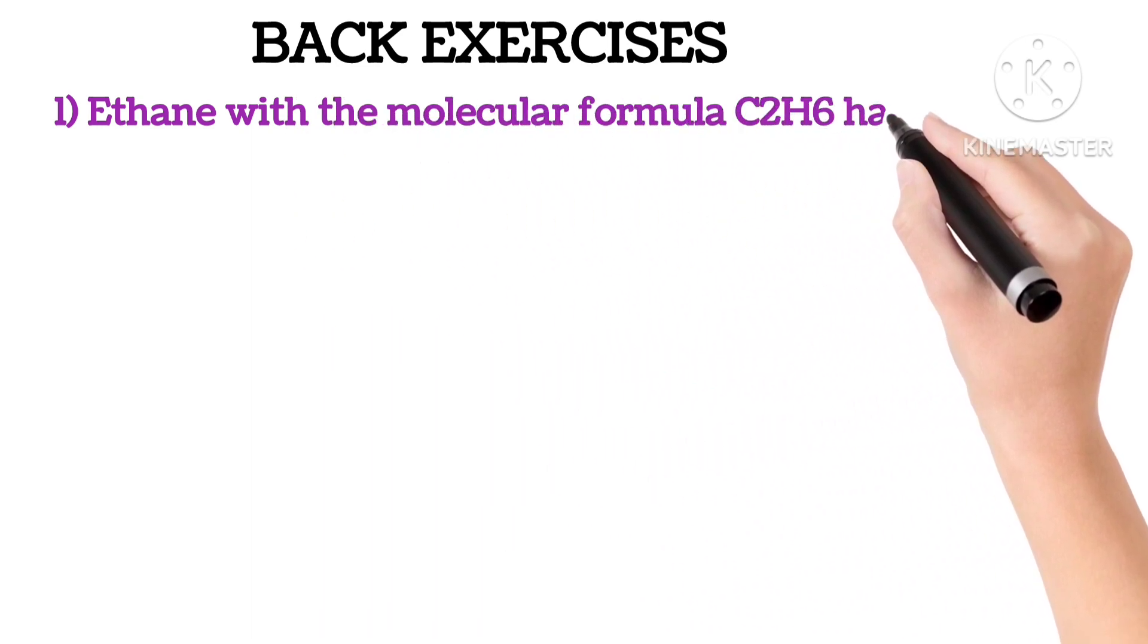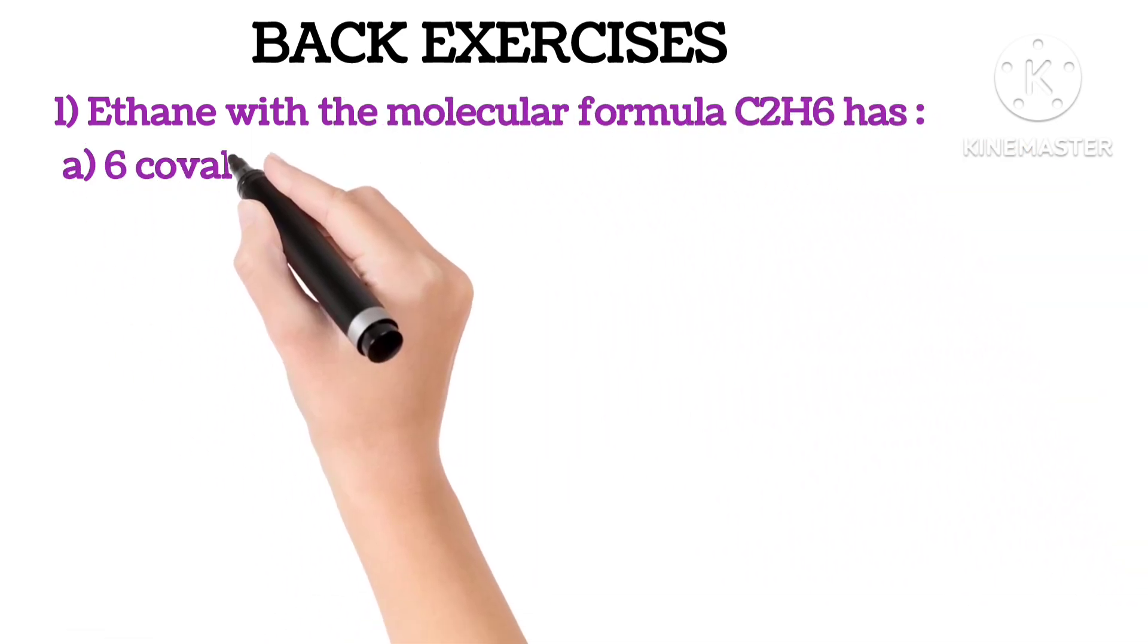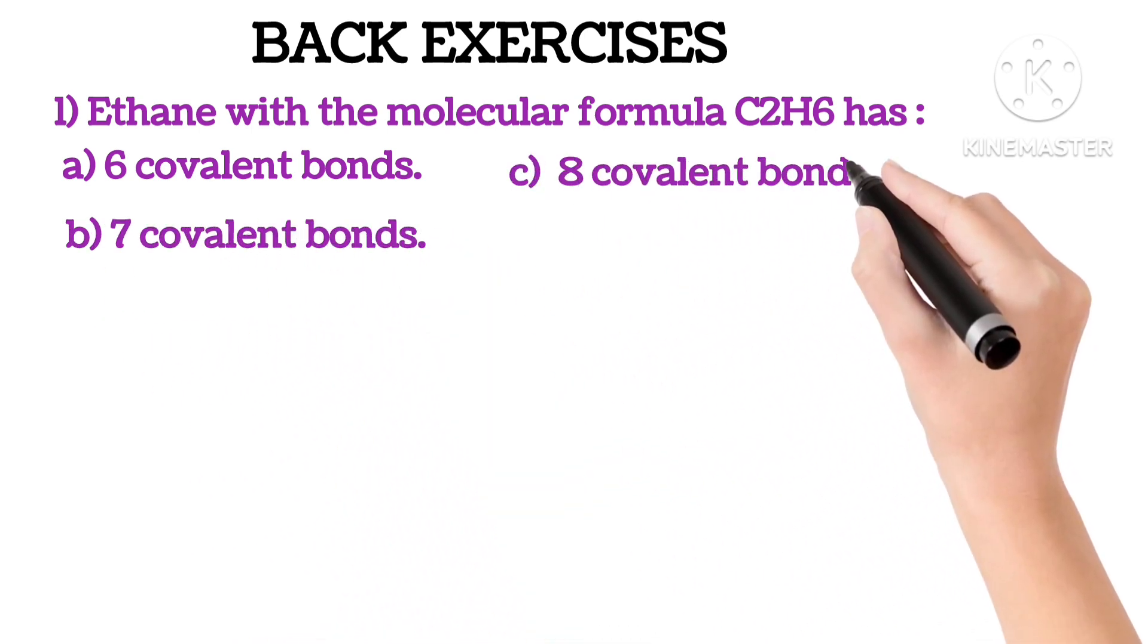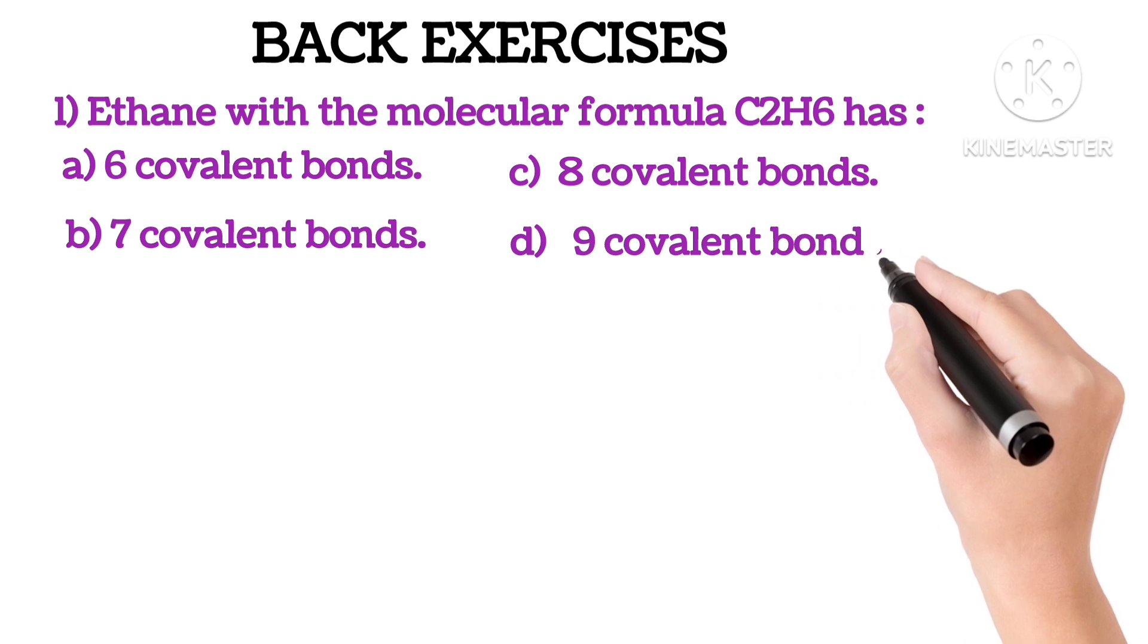First, ethane with molecular formula C2H6 has: A. 6 covalent bonds, B. 7 covalent bonds, C. 8 covalent bonds, or D. 9 covalent bonds.